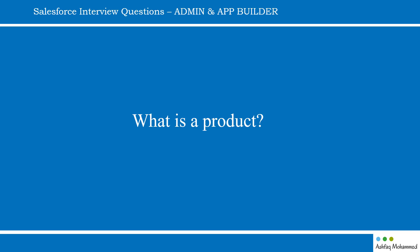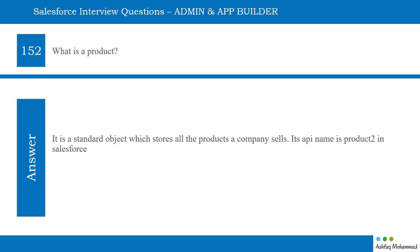What is a product? It is a standard object which stores all the products the company sells. Whatever I'm selling — say I'm a Dell company selling laptops, different laptop models, servers, and printers — all the product information can be stored in the product object. But the API name: normally account has an API name of 'Account' and contact has 'Contact', but product has the API name 'Product2'. When you're new, you try to find 'Product' but you don't find it — 'Product2' is the actual API name.